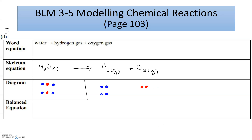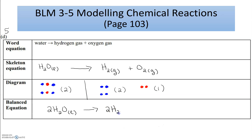Now I write the balanced equation with coefficients. From my diagrams: I drew two water molecules, two hydrogen molecules, and one oxygen molecule. So the balanced equation is 2 H₂O(l) → 2 H₂(g) + O₂(g). Again, we don't put a coefficient of one — just having the formula there tells us we have one.